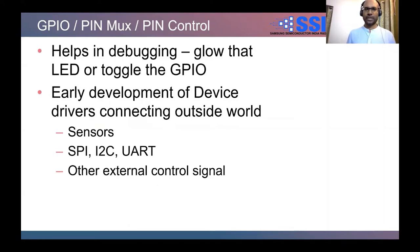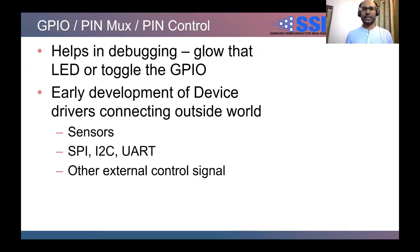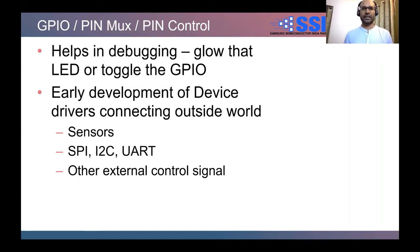The next thing is GPIO, pinmux, or pin control. One very interesting use of GPIO is in debugging — you can program a GPIO to toggle and monitor that toggling at various stages of your debugging or boot flow. If an LED is connected to that GPIO, you can glow the LED to find out what stage the flow has reached. Understanding GPIO also helps in early development of device drivers that interface with external devices like sensors or slave devices on SPI, I2C, UART, or any other external control signal, allowing you to have faster bring-up time.